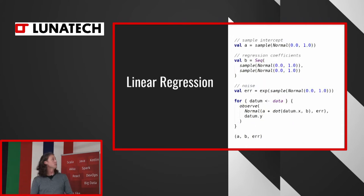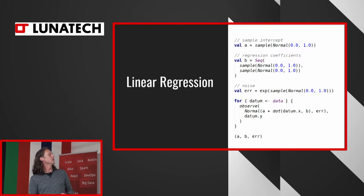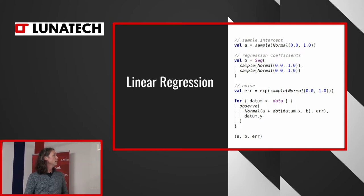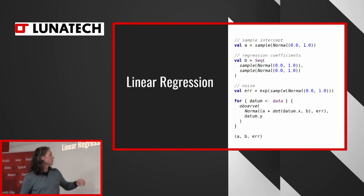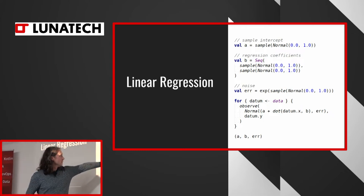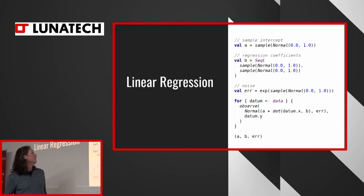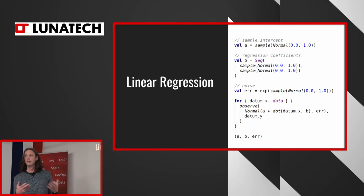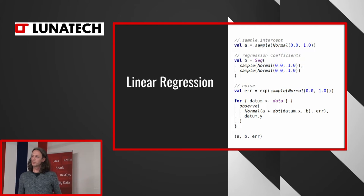When you do linear regression for instance, you have an intercept, you have a few regression coefficients. So this is for two dimensional X and then one dimensional Y. And then you have some noise term. So then you have an intercept and you take the inner product of the X vector and the regression coefficients. And then you observe Y. And then again, this is how you calculate the parameters of your model.